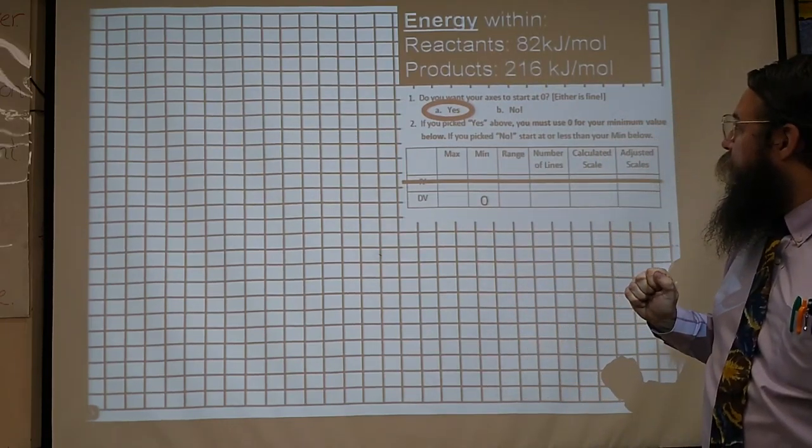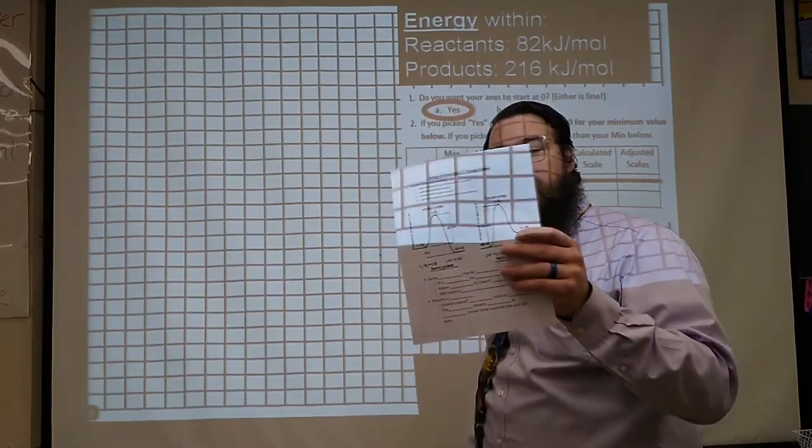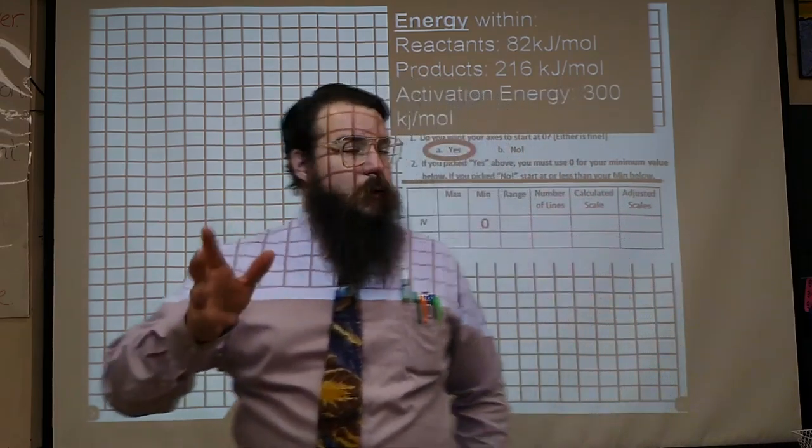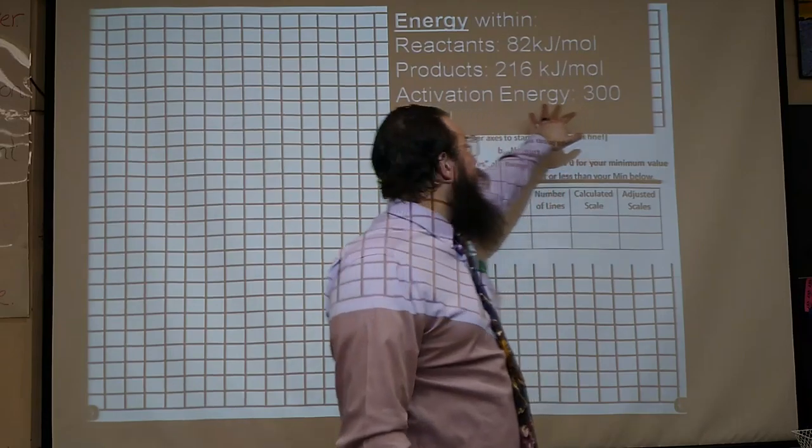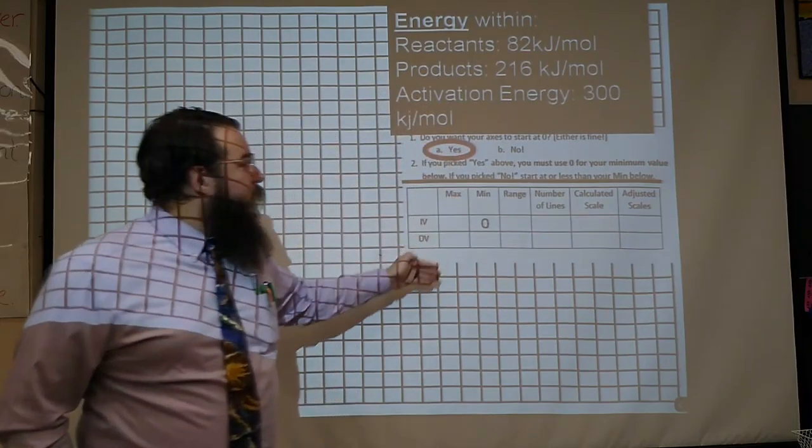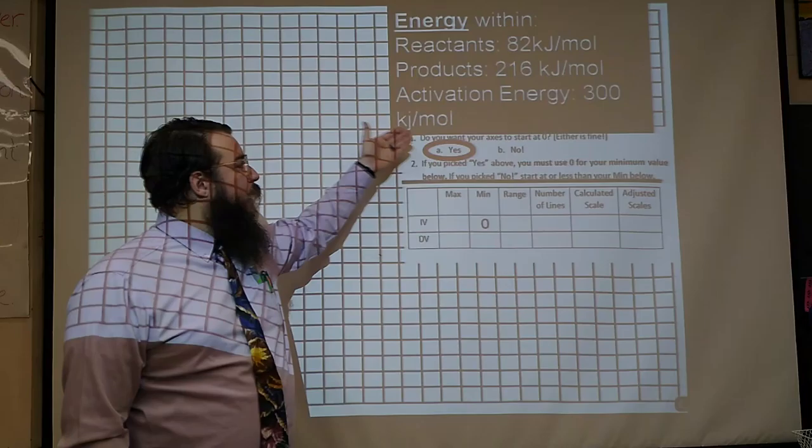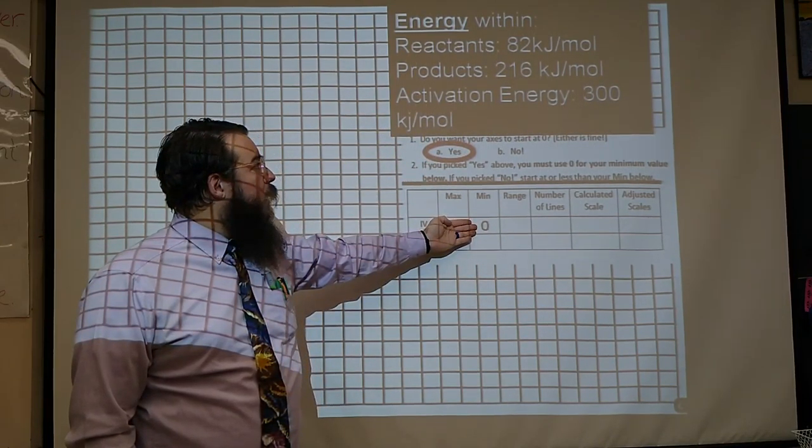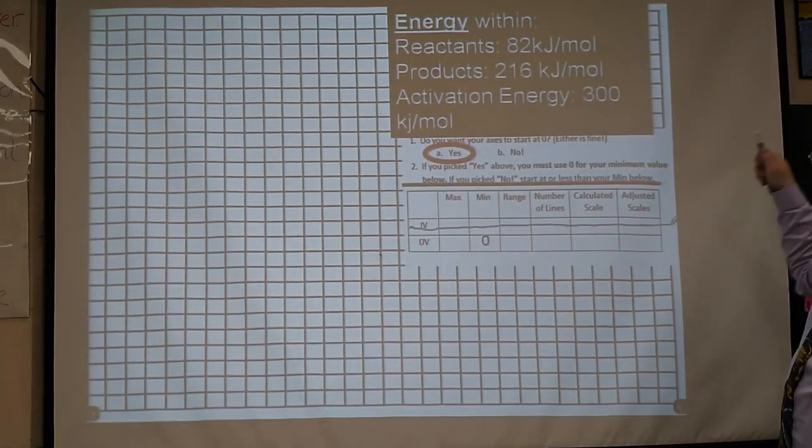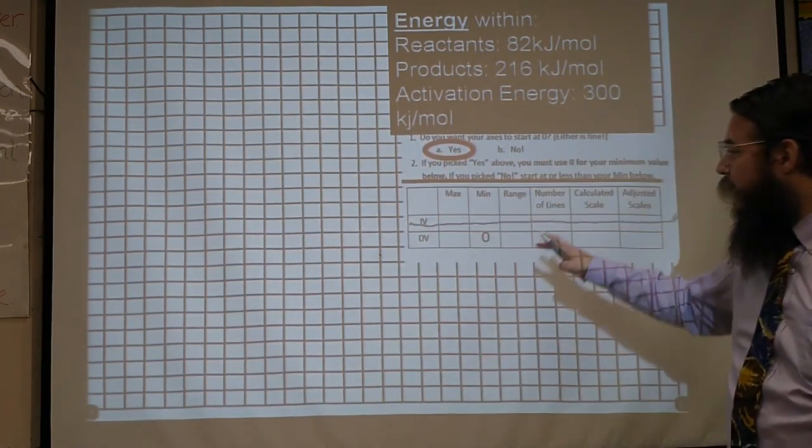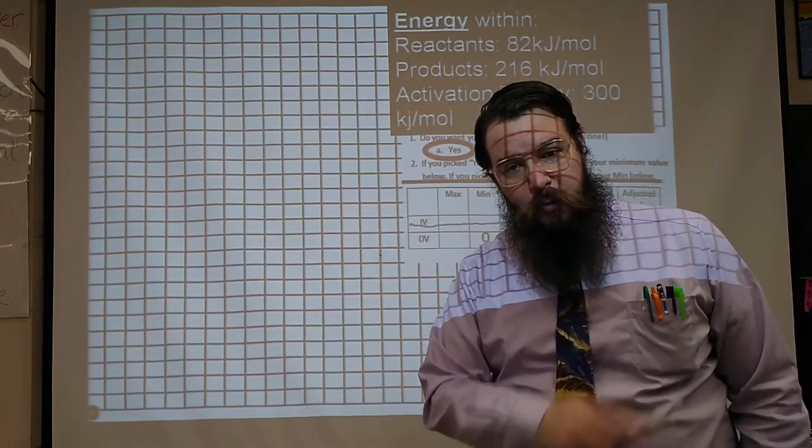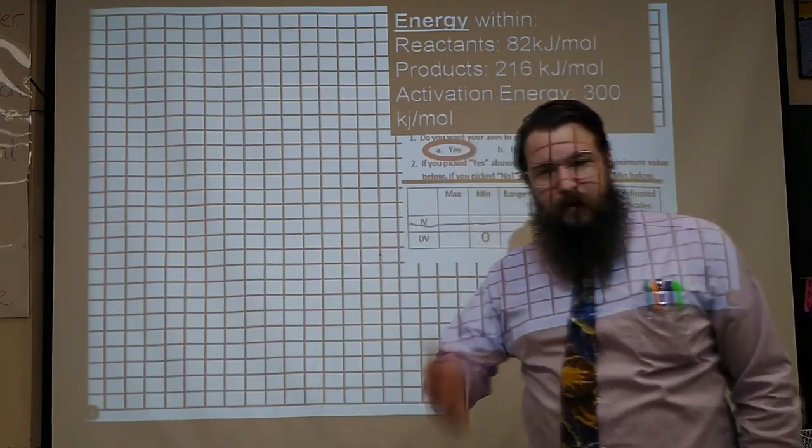I want you to make me a graph where we've got 82 kilojoules per mole of energy in the reactants and 216 kilojoules per mole in the products. I want it to look more like this curve, less like bar graphs. So in order to make this look more like a curve, let's go ahead and set the activation energy for 300 kilojoules per mole. That'll be the top of the curve. And so that everyone's graphs end up looking the same, so we have a good comparison to the graph that I'll be drawing, go ahead and start your minimum for your activation, start that sucker at zero. Keep in mind that you have categorical data for your independent variable, not numbers. So you will not need a scale for your x-axis, just for your y-axis.